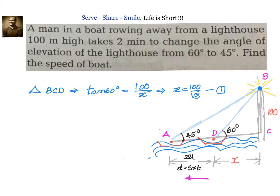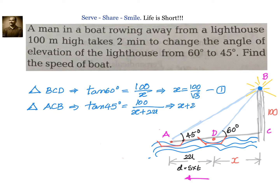Then we go to the next triangle, triangle ACB. In triangle ACB, we have tan 45 equal to 100 divided by x plus 2u. Since tan 45 is 1, we can write x plus 2u equals 100. This is equation number two.